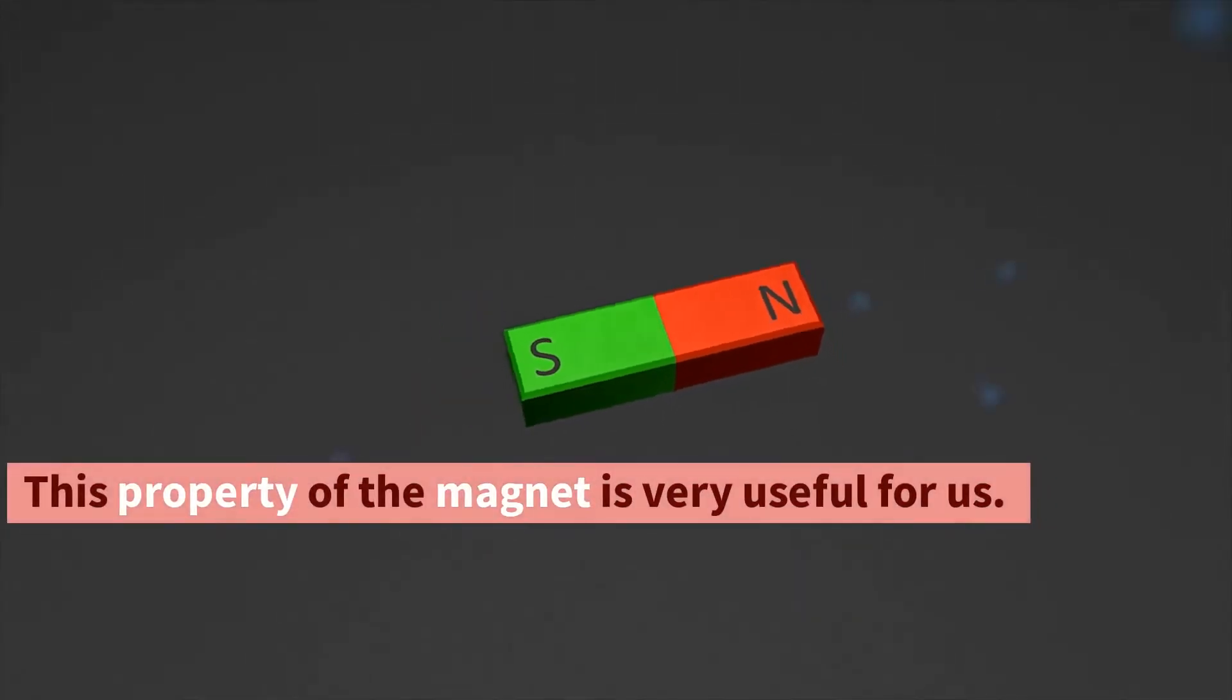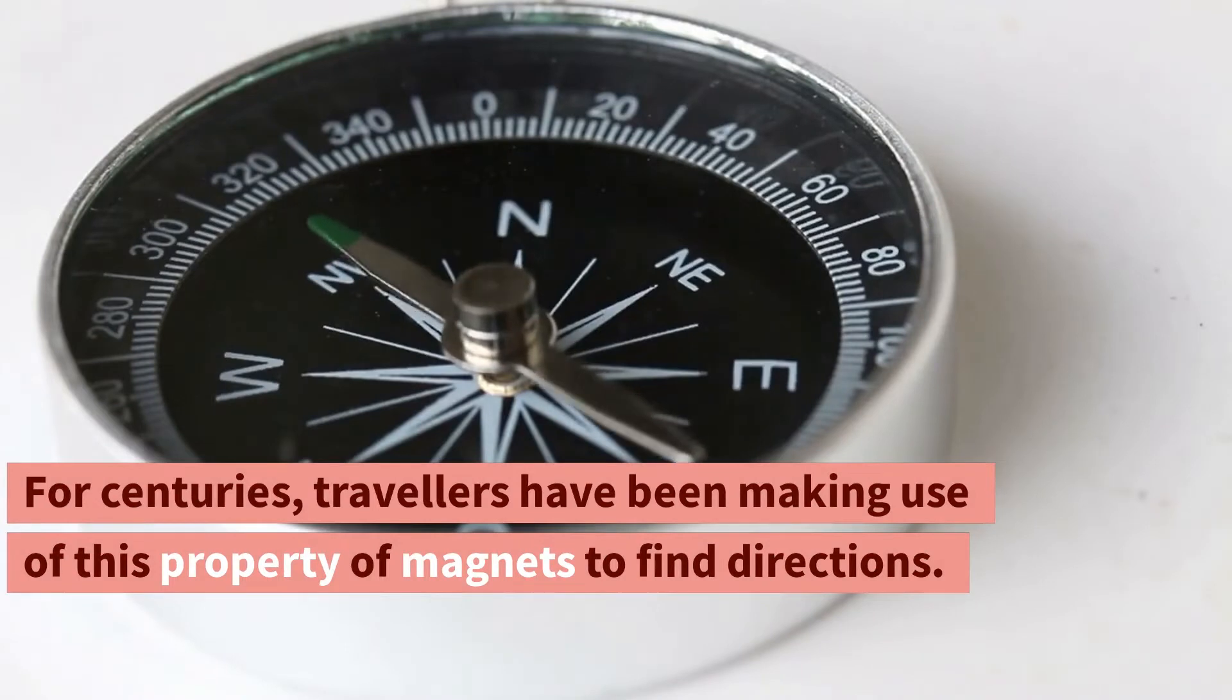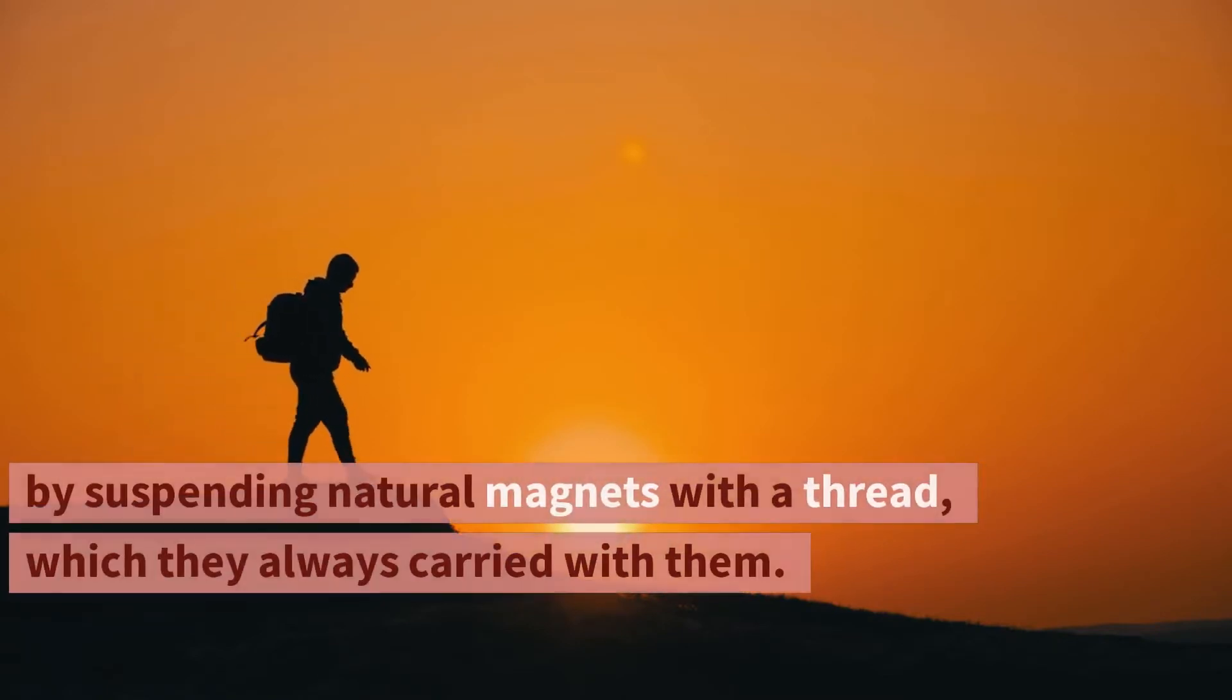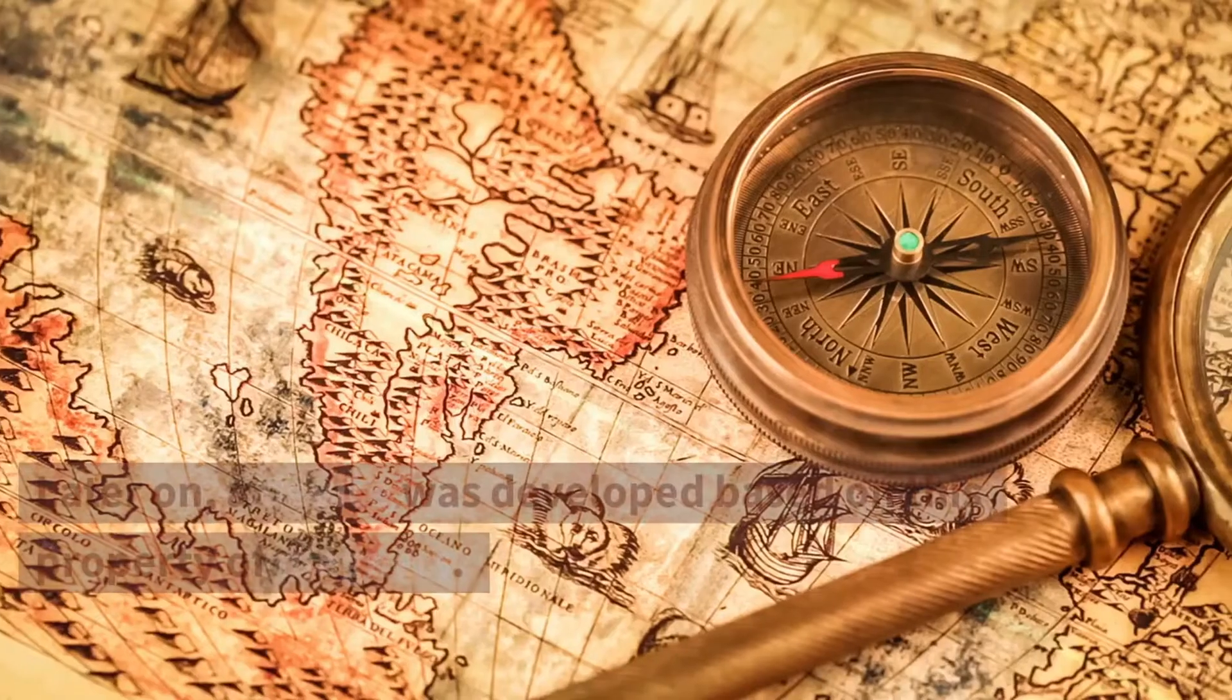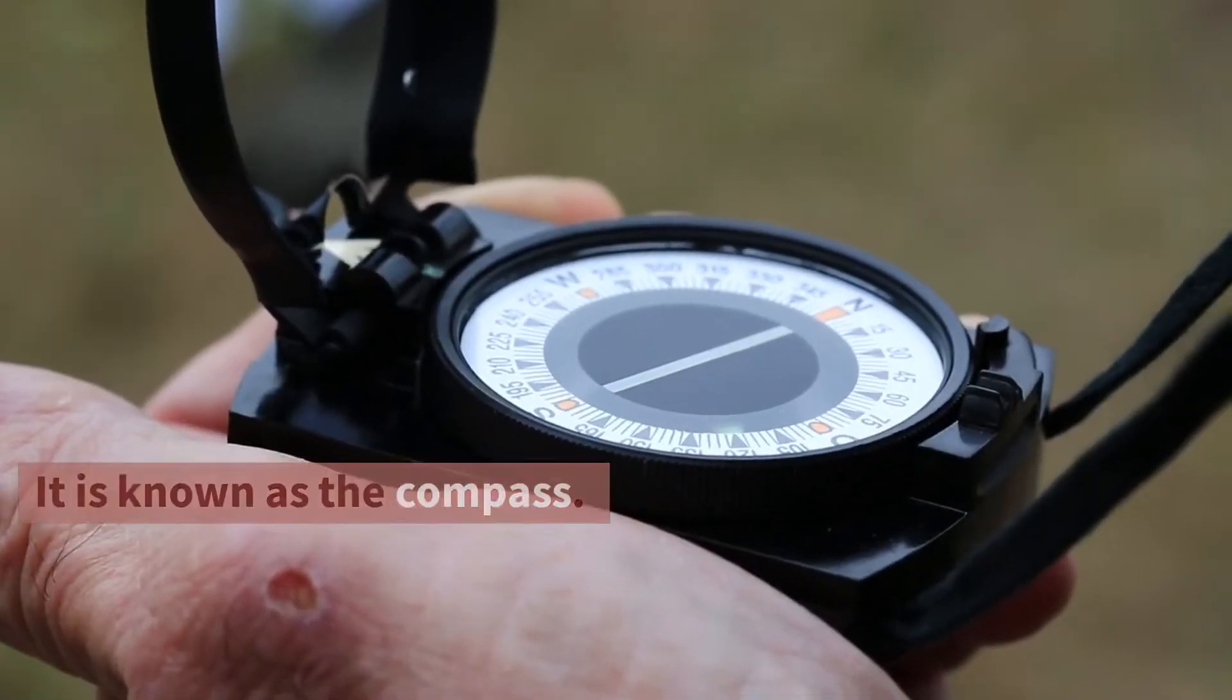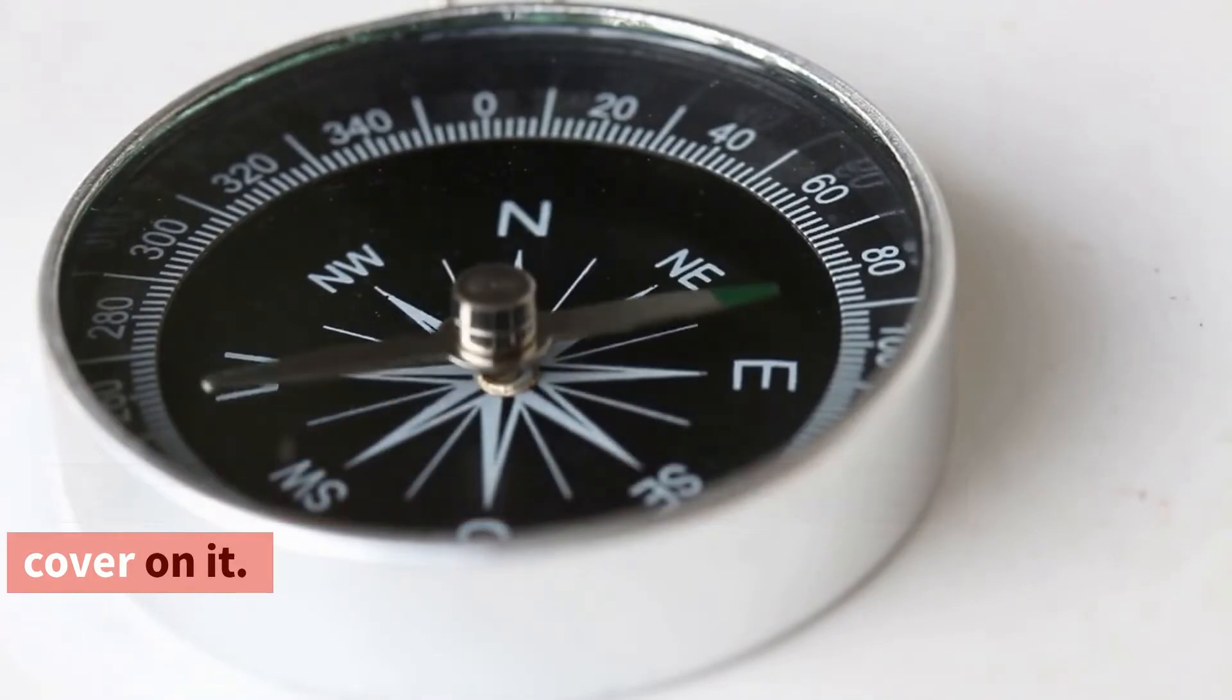This property of the magnet is very useful for us. For centuries, travelers have been making use of this property of magnets to find directions. It is said that in olden days travelers used to find directions by suspending natural magnets with a thread, which they always carried with them. Later on, a device was developed based on this property of magnets. It is known as the compass. A compass is usually a small box with a glass cover on it. A magnetized needle is pivoted inside the box, which can rotate freely. The compass also has a dial with directions marked on it.